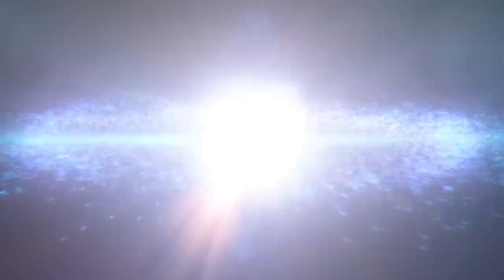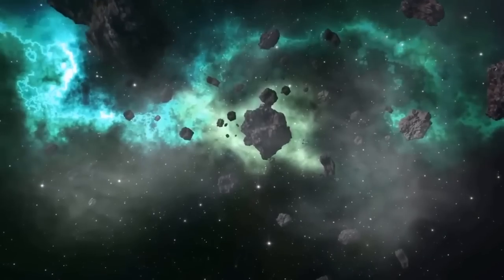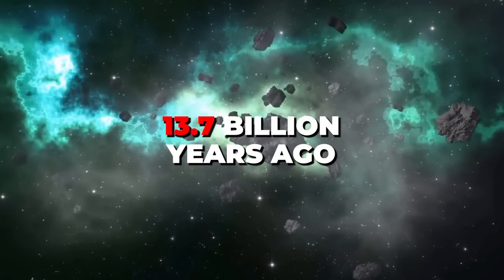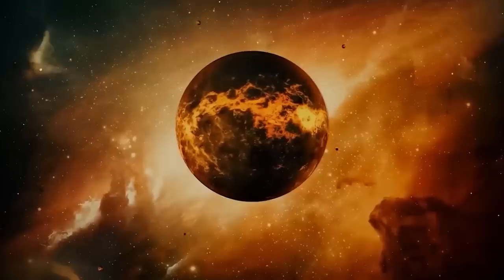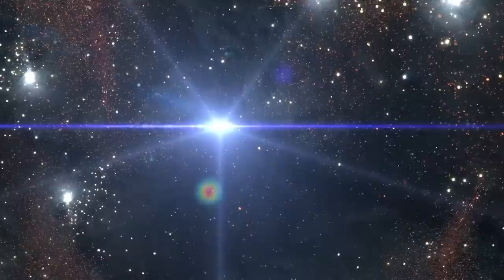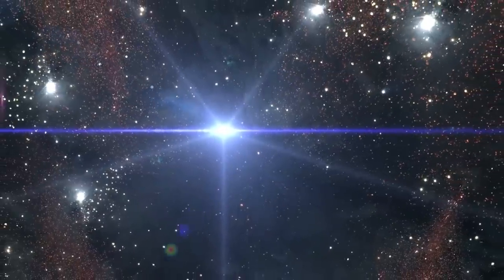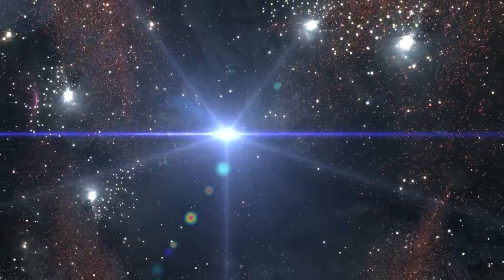The Big Bang model is a popular theory that explains how the universe came into being. It suggests that about 13.7 billion years ago, the universe was born from a hot, dense point, smaller than the head of a pin. Now, imagine this. Within fractions of a second, this tiny speck expanded rapidly, giving birth to the vast cosmos we know today.